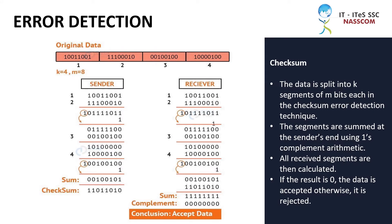In the checksum error detection technique, the data is split into k segments of m bits each. The segments are summed at the sender's end using one's complement arithmetic. All received segments are then calculated, and if the result is zero, the data is accepted; otherwise, it is rejected.